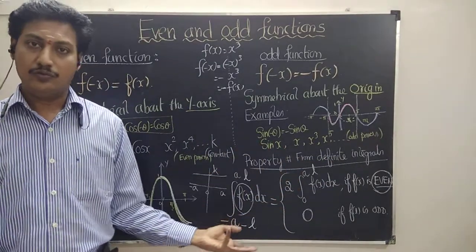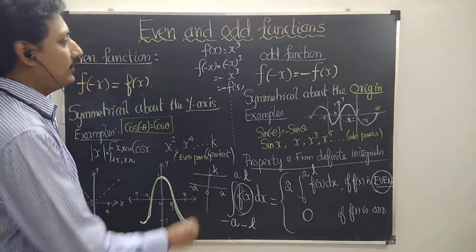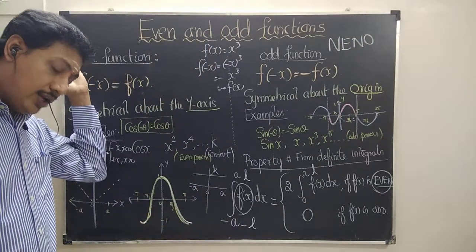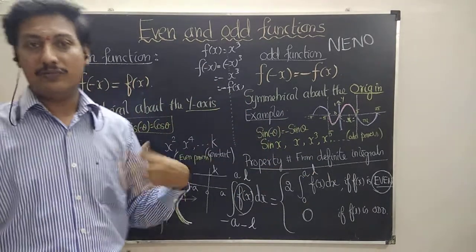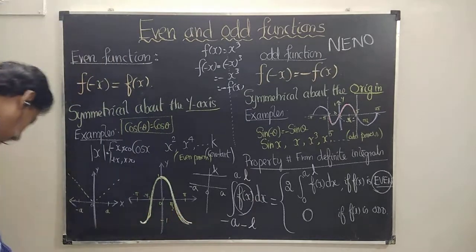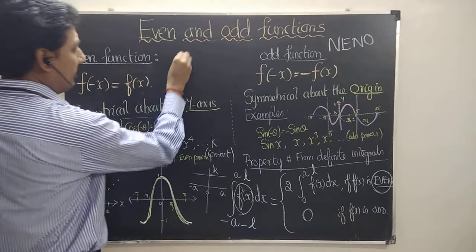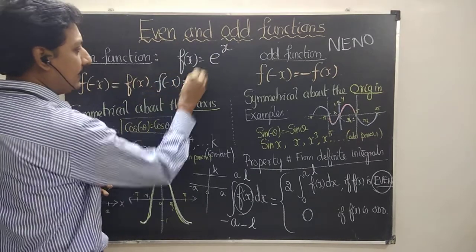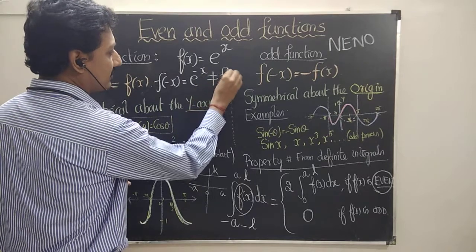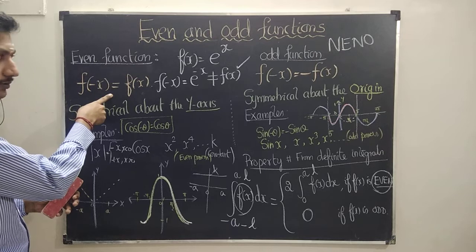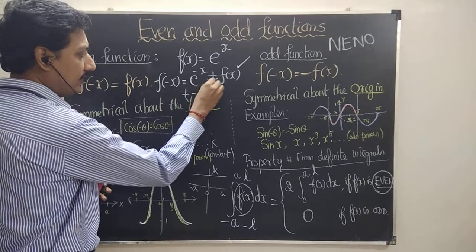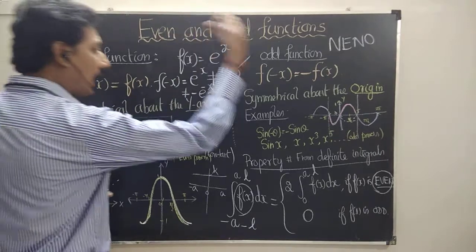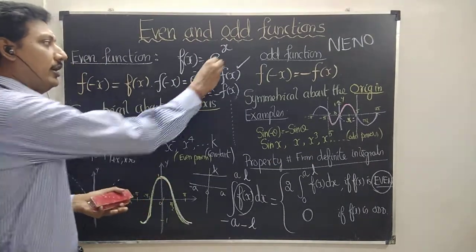Apart from even and odd, there is one more type: neither even nor odd. This means the function does not belong to either category. For example, f(x) = eˣ: f(−x) = e⁻ˣ, which is not equal to f(x), so it is not even. And e⁻ˣ is not equal to −eˣ either, so it is not odd. Therefore, eˣ is neither an even nor an odd function.